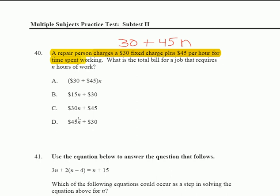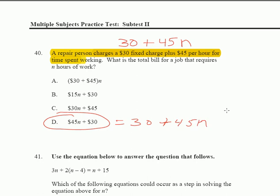The answer is D. If you're not able to see it, just remember — look at D — 45N plus 30 is the same as writing 30 plus 45N. It's identical. Just look at that, read it over, and it really should come to you. It shouldn't be that difficult.